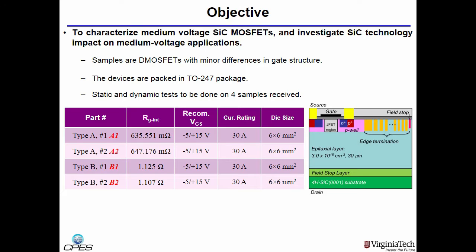We have a total of four samples received from SOMITOMO Electric Industries, which are D MOSFETs. The four MOSFETs are two types, type A and type B, with minor differences in gate structure. The devices are packed in TO247 full mold packages, and the aim is to do static and dynamic characterization on all of them.